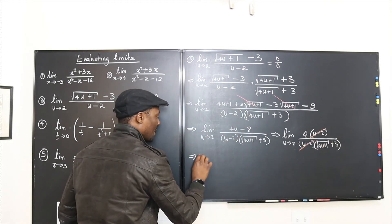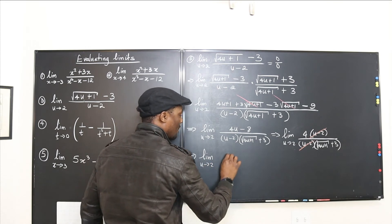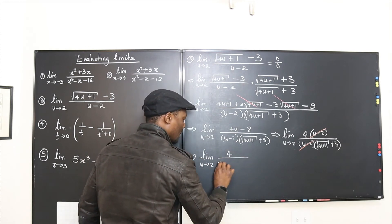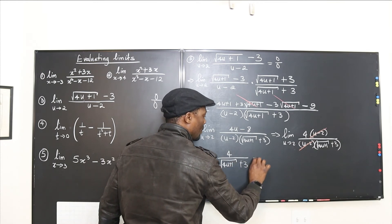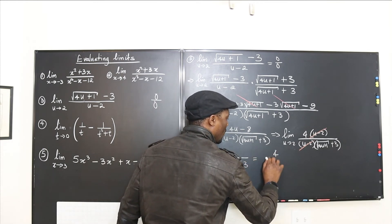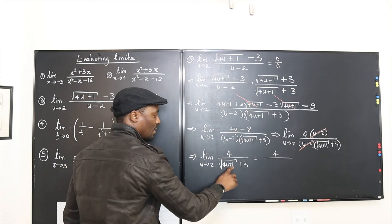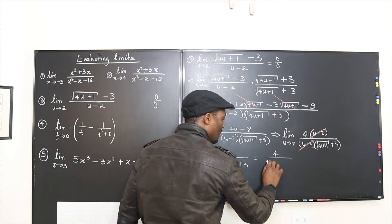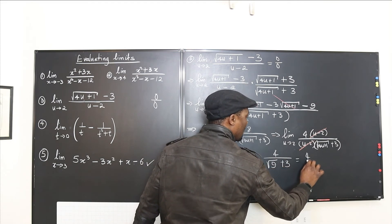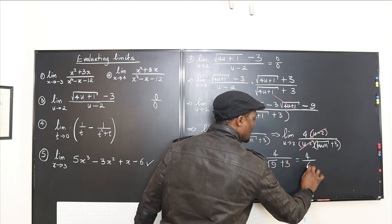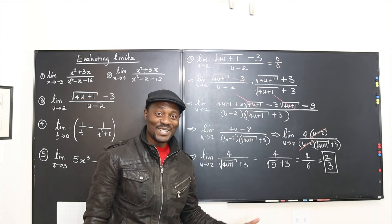What remains is the limit as u goes to 2 of 4 over (√(4u+1) plus 3). Substituting u equals 2: 4 times 2 is 8, plus 1 is 9, square root of 9 is 3, so 3 plus 3 is 6. The answer is 4 over 6, which simplifies to 2 over 3. That's the limit of that expression.